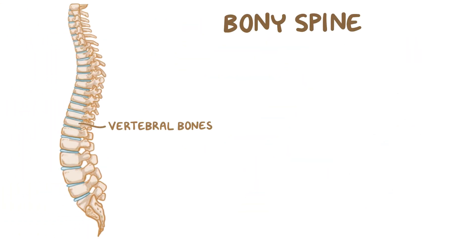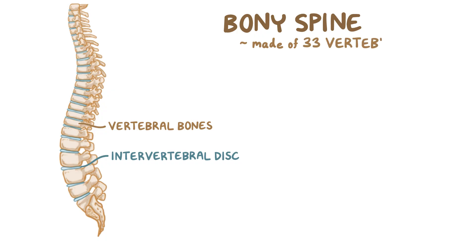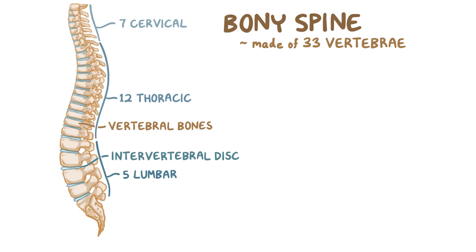Now, the bony spine is made of vertebral bones, and there are intervertebral discs that sit between adjacent vertebrae. The spine is made of 33 vertebrae, which can be divided into 5 regions. The cervical region has 7 vertebrae, the thoracic region has 12, the lumbar region has 5, the sacral region has 5 as well, and the small tail-like coccygeal region is made up of 4 fused vertebrae.